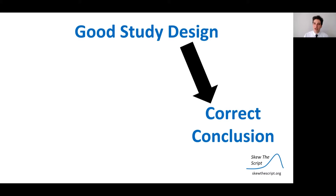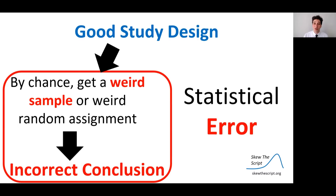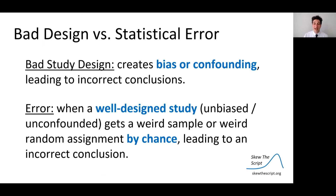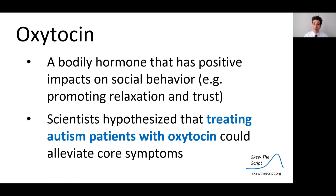But what I want to talk about today is that even well-designed studies can get unlucky. You can get a good study design and a correct conclusion, or you can get a weird sample and weird random assignment — even in a good study design — and come to an incorrect conclusion. That's called a statistical error. Bad study design creates bias or confounding leading to incorrect conclusions, but error is when a well-designed study gets a weird sample by chance. So let's divide errors into two types: type 1 and type 2 errors.